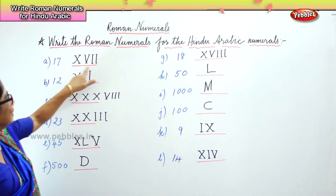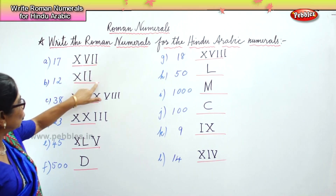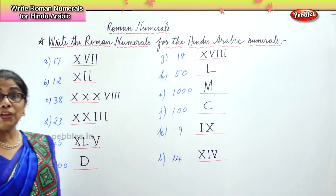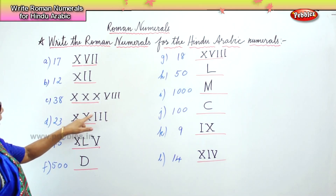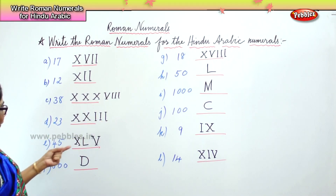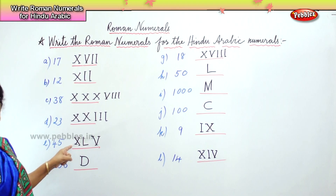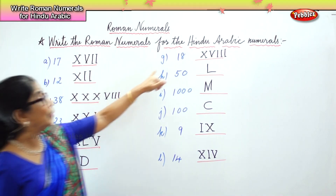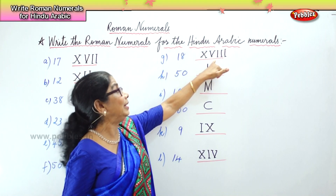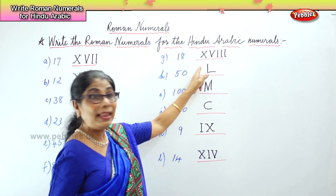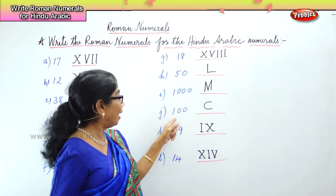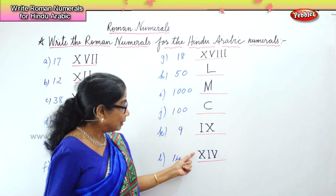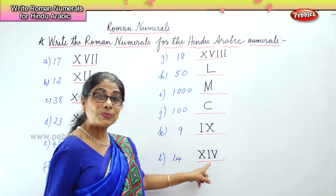So now let's read the Roman numerals: 10 and 7 is 17. 10 and 2 is 12. 38: 10, 20, 30, 35, 36, 37, 38. Then 23: 10, 20, 21, 22, 23. 45: here you have 50 and 10 minus — so 40 and 5, 45. 500 is D. 18: 10, 15, 16, 17, 18. 50 is L. 1000 is M. 100 is C. 9 is 10 minus 1. And 14: 10 and you have 5 minus 1, so 14. We learnt to write the Roman numerals given the Arabic numerals.